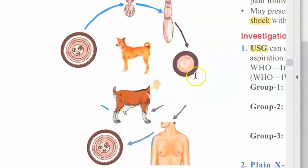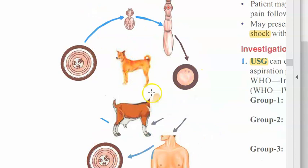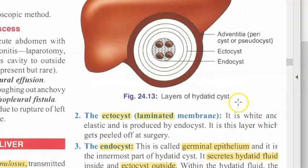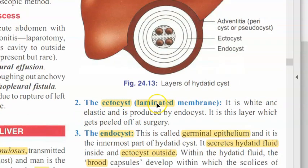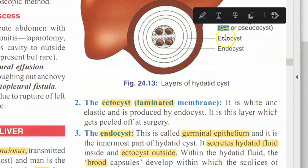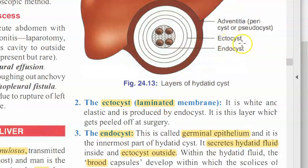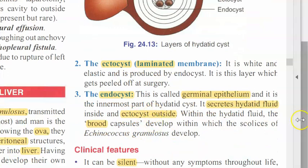Here they have shown the life cycle of echinococcus — basically you get it from a dog. Now the ectocyst is also called the laminated membrane — this is important. The ectocyst, also called laminated membrane, is derived from the endocyst. The endocyst is the germinal epithelium, which produces the ectocyst and the hydatid fluid inside.